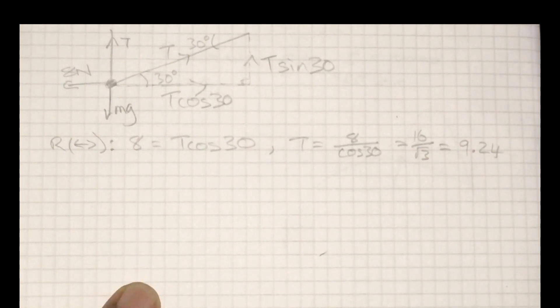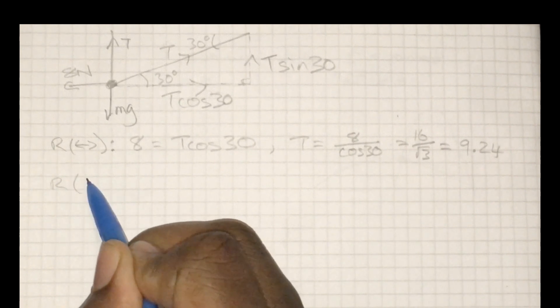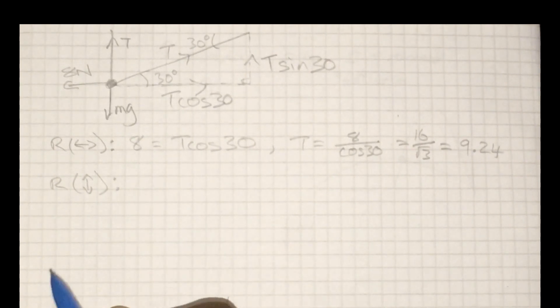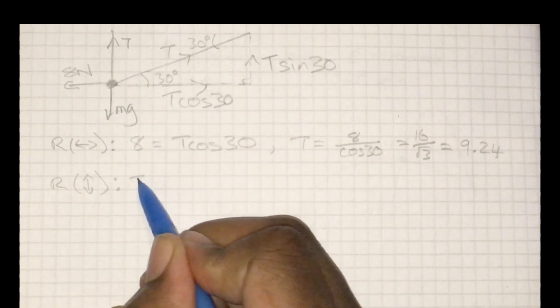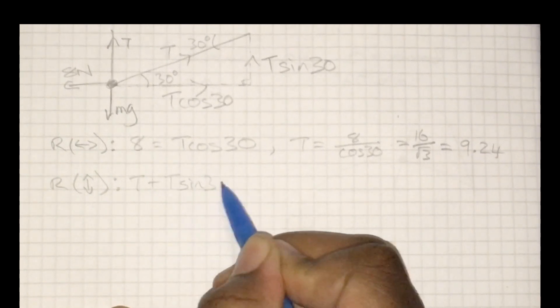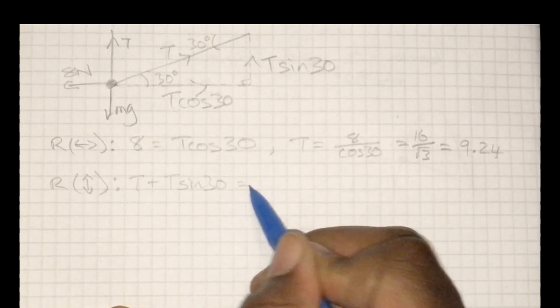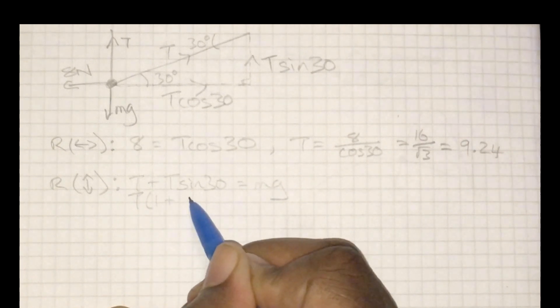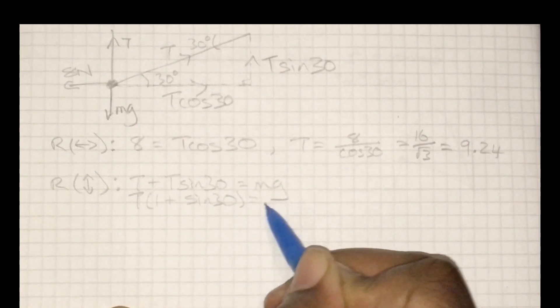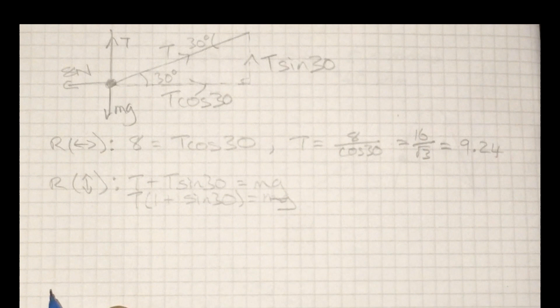Okay, let's go ahead and resolve vertically. There's going to be two unknowns this time around - there's the t and we're also going to have an mg involved. So I'm solving for mg.